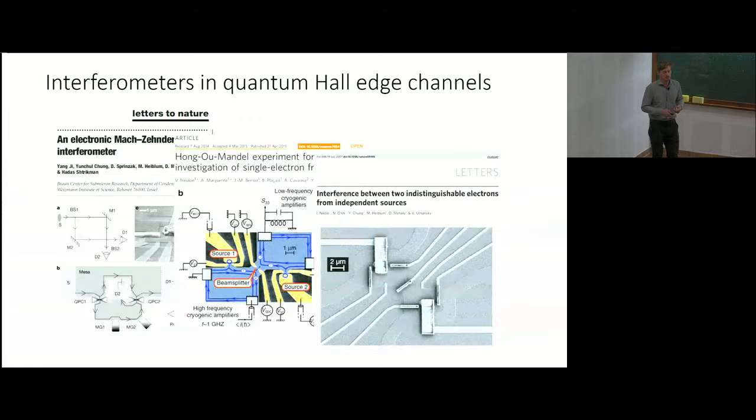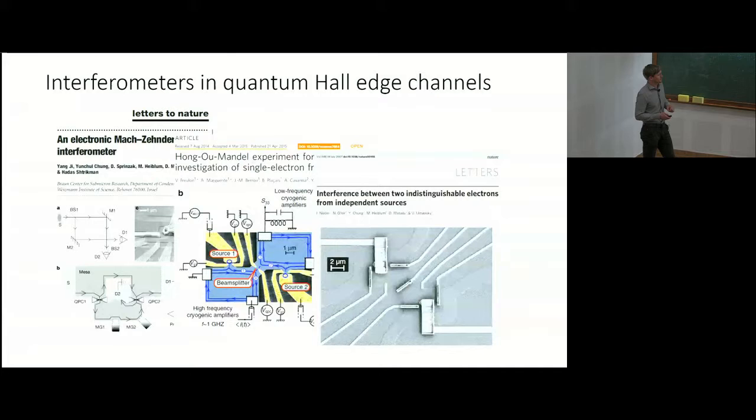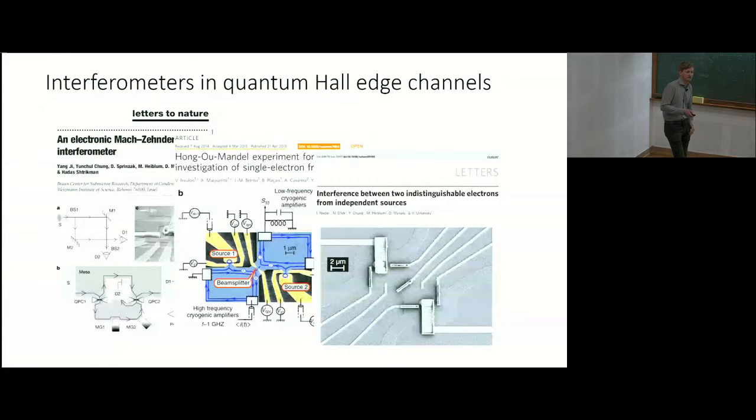In the electronic versions, the particles that interfere are not photons but electrons, and because of that they interact with the other electrons in the vicinity of the devices. This gives rise to a decrease in visibility in the interference fringes in those experiments. The question is: why would you do this at all, because photons do this perfectly without these problems?